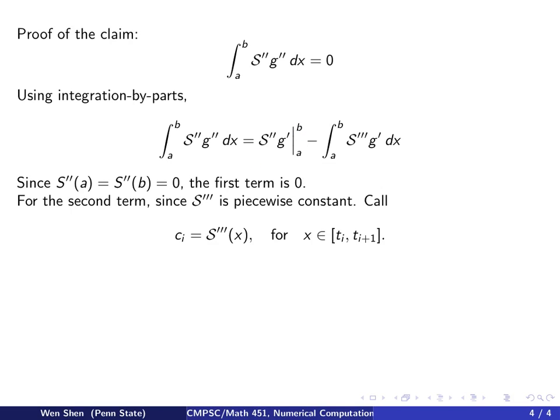Now let's look at the second term. Recall that s is a cubic spline, so it's piecewise cubic polynomial. And if you differentiate it three times, what you get in the end is piecewise constant. So for each cell, cell number i from ti to ti plus 1, this s triple derivative of x here is a constant. So let's denote this constant by ci.